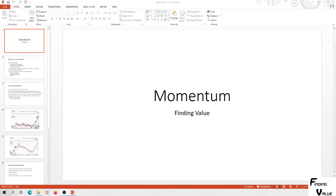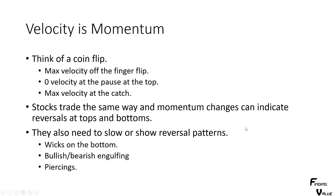So we'll jump in and talk about momentum. Momentum means velocity. Think of a coin flip - you flip a coin right off your finger, so you have max velocity right off the finger flip. Gravity will act on it and eventually it'll hit zero velocity at the top. Then it'll gain velocity as it comes back down to your hand where you catch it. Max velocity at the finger flip, max velocity at the catch, with zero velocity at the top.